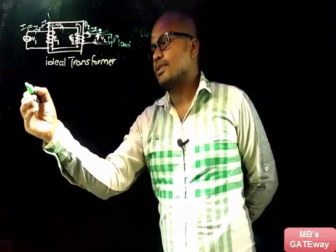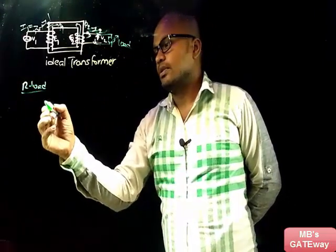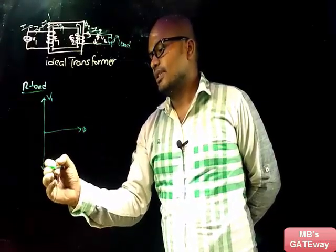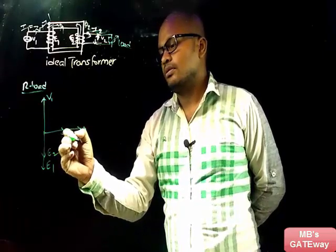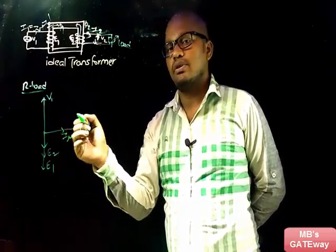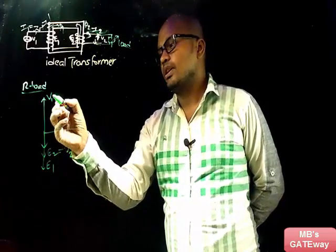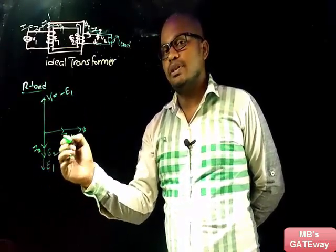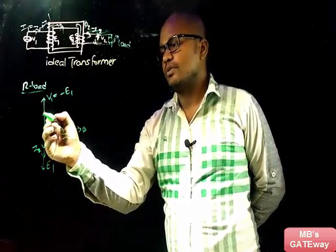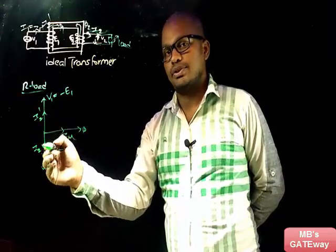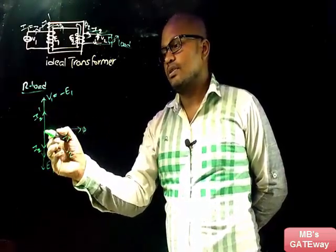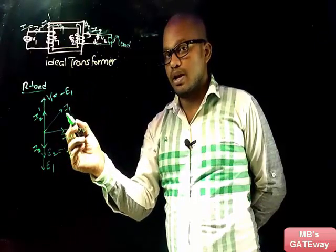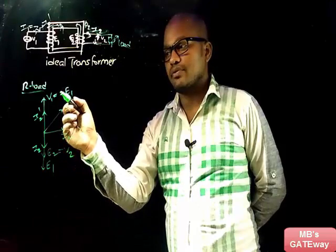Now let's draw the phasor diagram for the ideal transformer on load, considering resistive load. We have V1, phi, E1, E2, and Iμ. Since there are no losses, E2 equals V2 and V1 equals minus E1. For a resistive load, current I2 and E2 are in phase. I2' is in the exact opposite direction to I2. The resultant of Iμ and I2' is I1, and since I2' equals I1, the phasor diagram is complete.